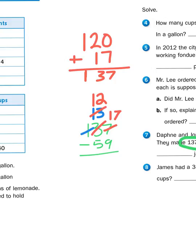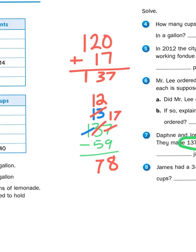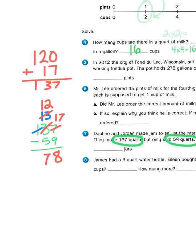So now I'm going to subtract 17 minus 9. That leaves me with 8. 12 minus 5. That leaves me with 7. So the first part of my problem is there were 78 quarts left.